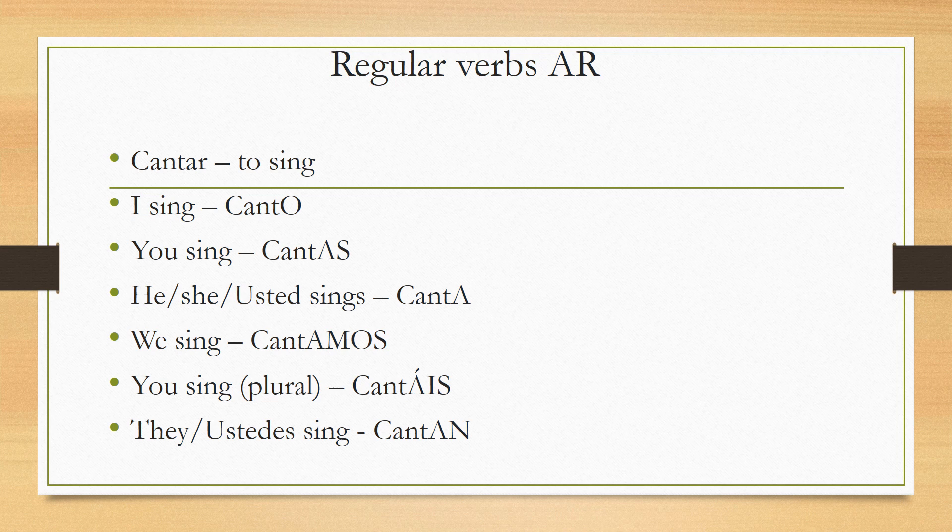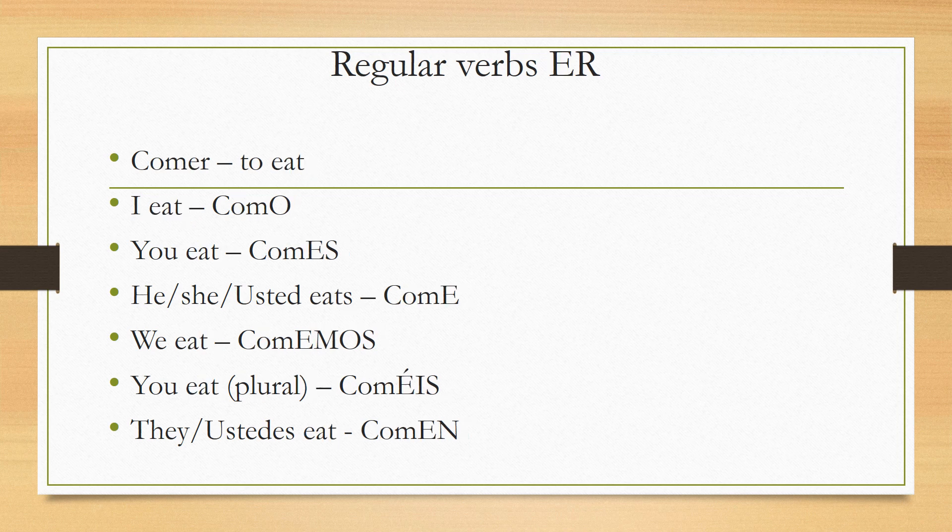Now for the ER verbs, let's take the example of 'comer.' For 'I,' the ending is O — so 'I eat' is 'como.' For 'you,' the ending is ES because it's an ER verb — so 'you eat' is 'comes.' For 'he,' 'she,' or 'usted,' the ending is E — so 'he/she eats' is 'come.'